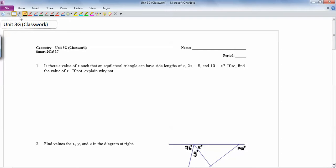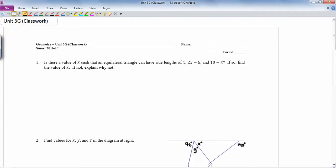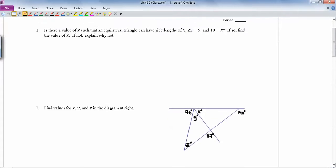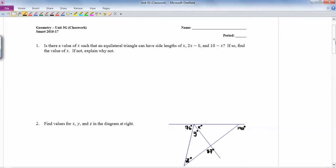Okay, so 3G, still unit 3, stuff about polygons and parallel lines. First question: is there a value of x such that an equilateral triangle, so remember equilateral means all sides are the same, lateral means sides, can have side lengths of x, 2x minus 5, and 10 minus x?